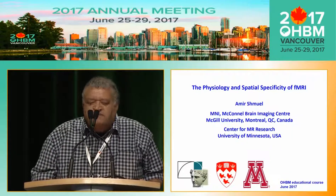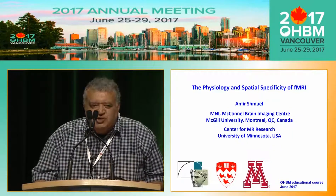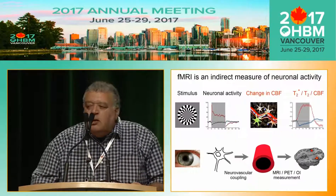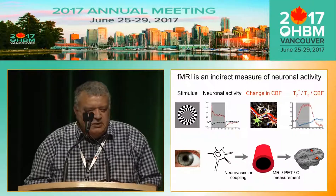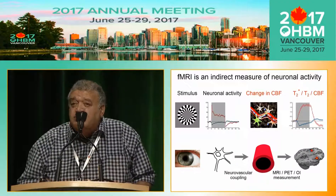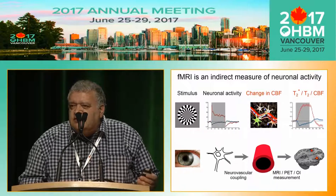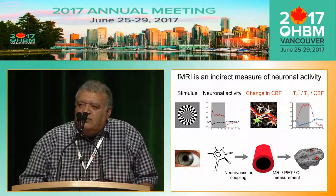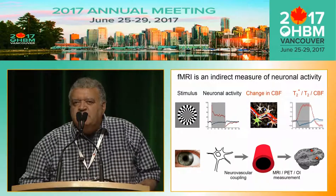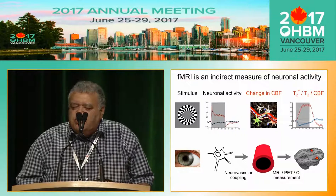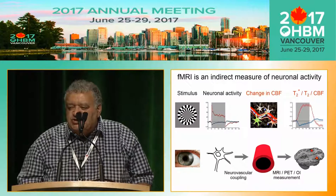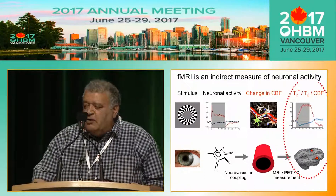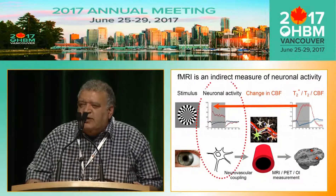Good morning, everybody. I'll be talking about the physiology and specificity of functional MRI. When we introduce a subject into the magnet, present sensory stimuli or motor tasks, we measure T2 star, T2, or cerebral blood flow signals. In between, there are changes in neuronal activity and changes in the vasculature. Although we measure functional MRI, most of us are really interested in changes in neuronal activity.